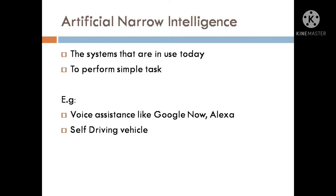Narrow Intelligence systems are the systems that are in use today. These systems have been developed to perform simple tasks. Artificial Intelligence machines are intelligent enough to smartly perform a single task. For example, voice assistants like Google Now, Alexa, etc.